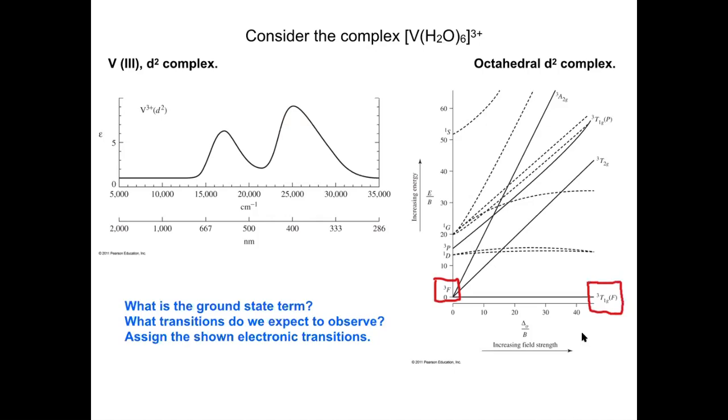That means all of the transitions we see will be starting in the triplet T1g state and then be excited to a higher energy state. In order to predict what those transitions will be for those higher energy states, we have to remember our selection rules. The key one is the spin multiplicity has to be conserved. We're starting with a triplet state.